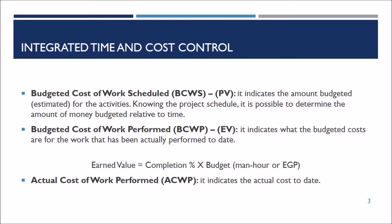Planned value, or budgeted cost of work scheduled, indicates the estimated budgeted amount for the activities at a certain time of the project. Therefore, you are able to know the amount of money budgeted relative to time.